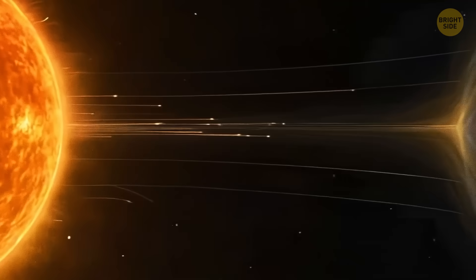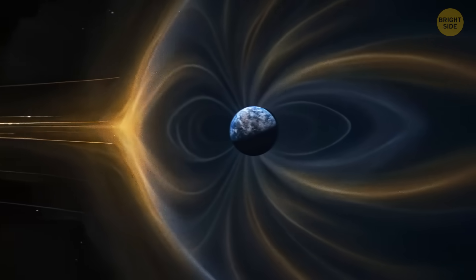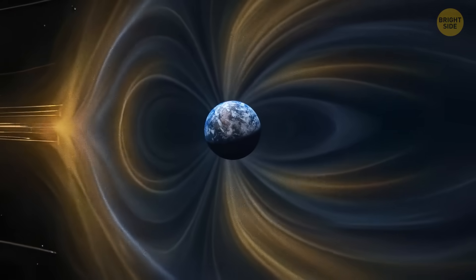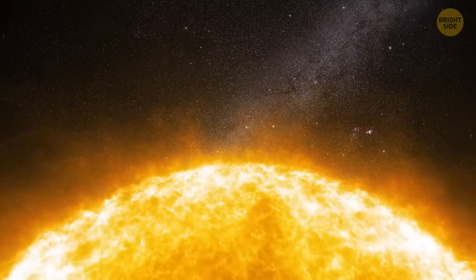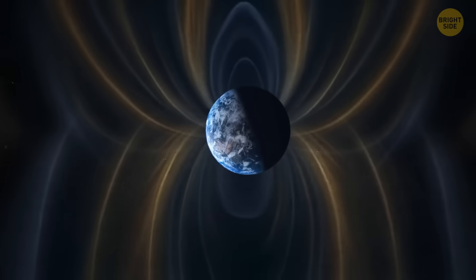The thing is, when the Sun is active, our upper atmosphere swells, which makes the inner radiation belt lose some of those protons. And when the Sun is chill, proton numbers go up again.